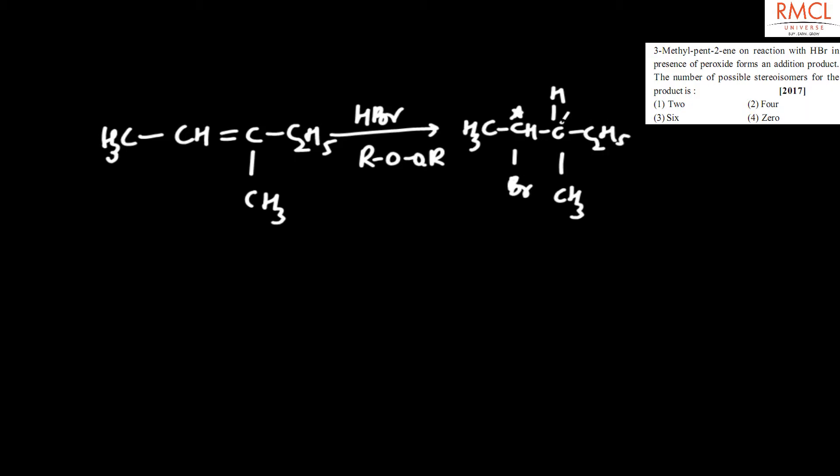Both are chiral carbons. The formula for stereoisomers is 2^n, where n is the number of chiral carbons. Since 2 chiral carbons are present, 2^2 equals 4. The correct answer for this question is option 2, which is 4.